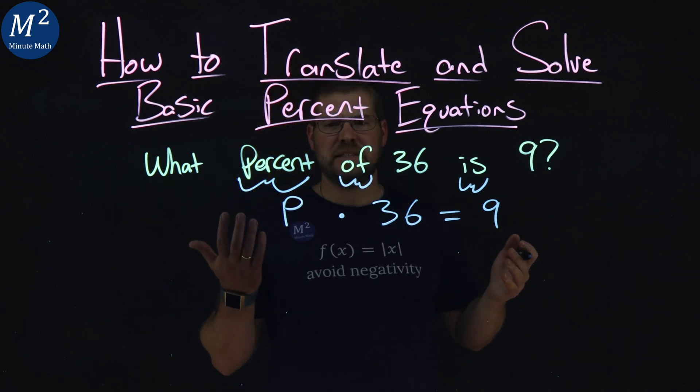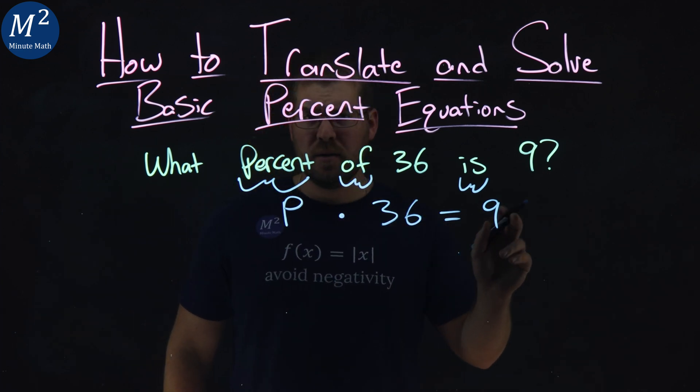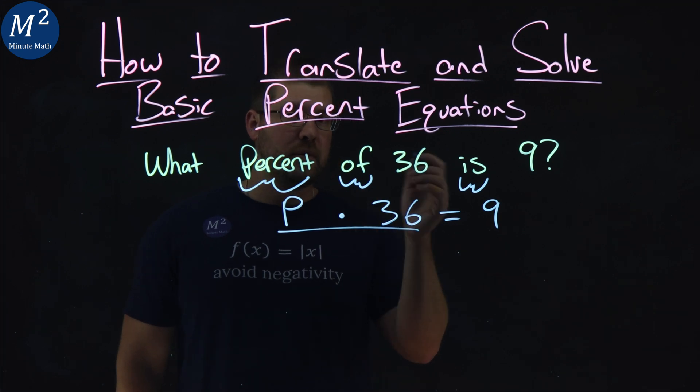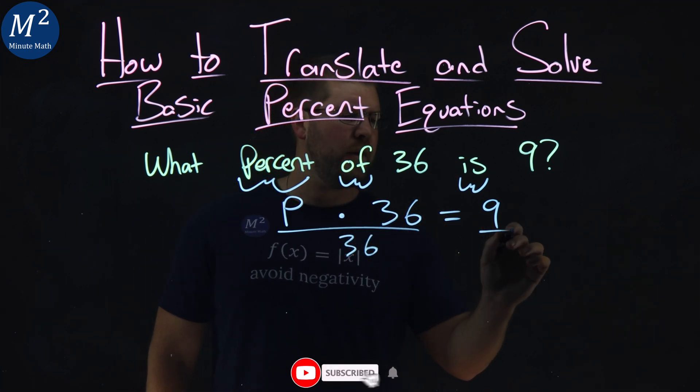Let's bring that down. And now we have a pretty easy statement here. P times 36 equals 9, and we can solve that. Opposite multiplication is division. Divide both sides by 36.